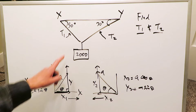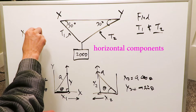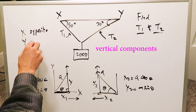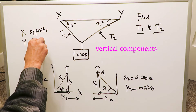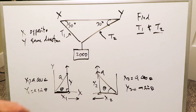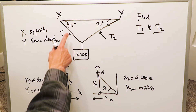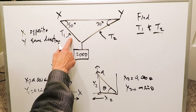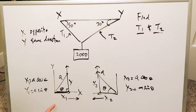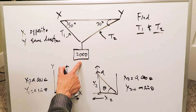When you set up the equations, the x-dimensions will be opposite to each other, and the y-dimensions will be in the same direction but opposed by the weight. I'm showing you how to handle these questions without knowing the physics — you're thinking about horizontal and vertical components of these angles and the tension created by those angles.